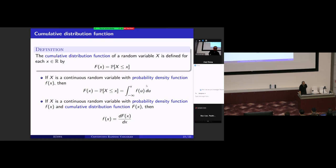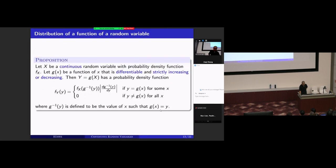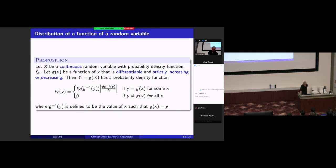The probability density function f means that if you wish to know the probability that a random variable takes a value between A and B, it equals the integral of f over that interval. This is also how to calculate the CDF using the PDF — you take the integral from minus infinity up to a given value. So the PDF is just the derivative of the CDF for continuous random variables. I also discussed how to derive the PDF of a function of a continuous random variable using a proposition that we will use today.